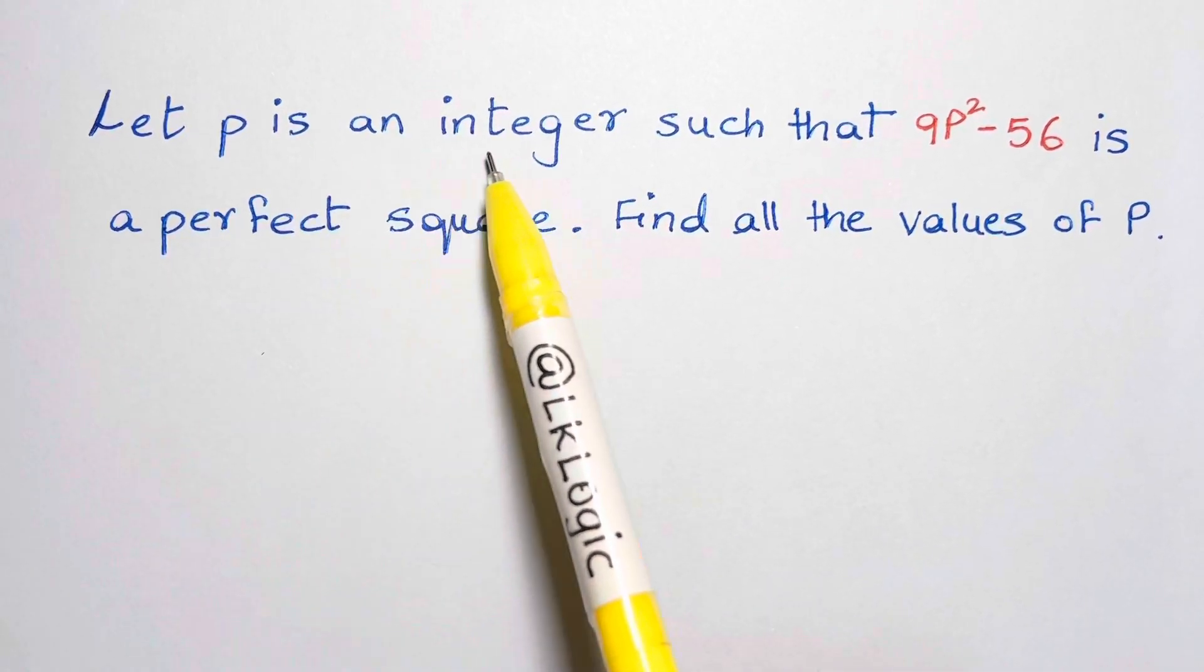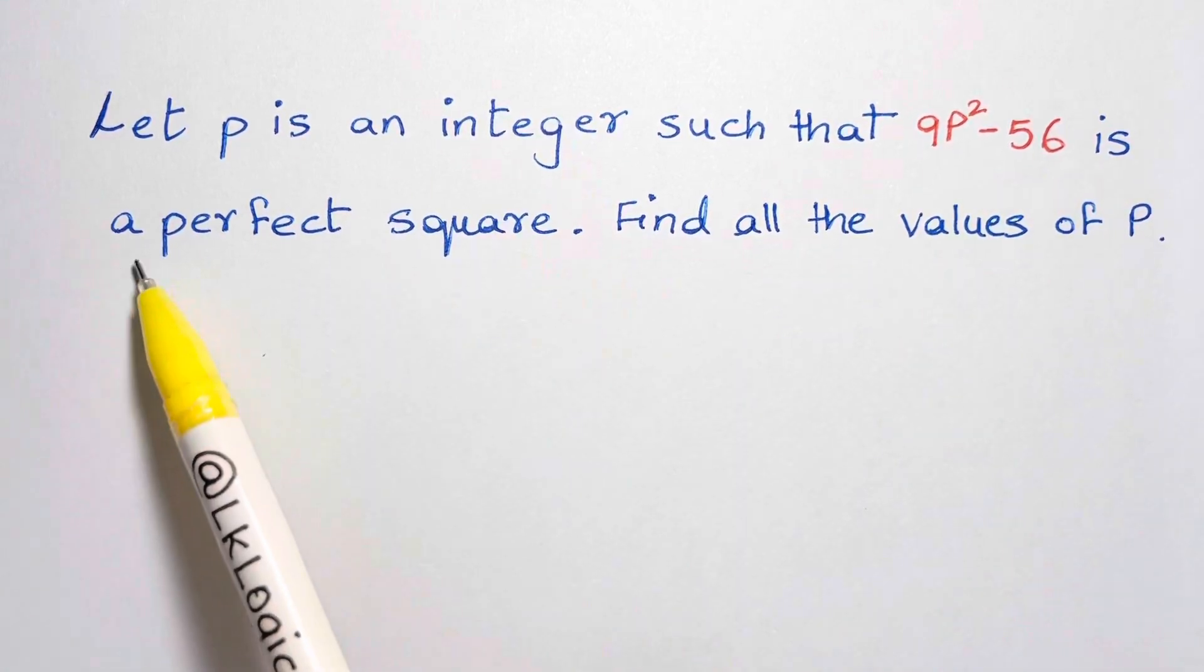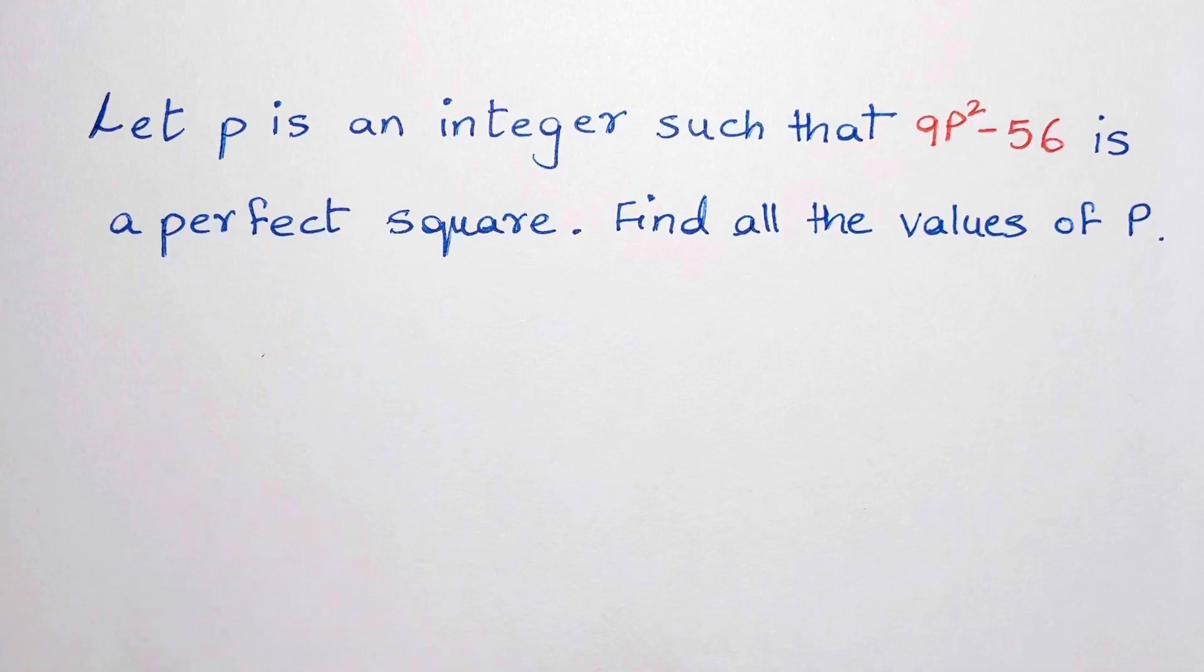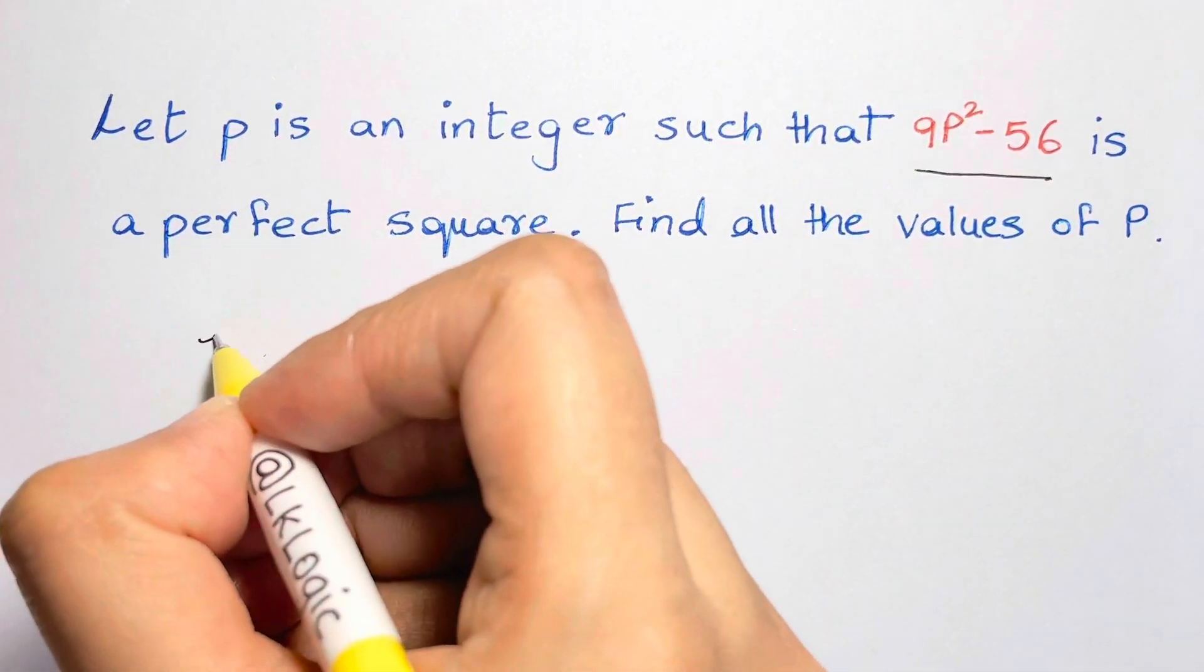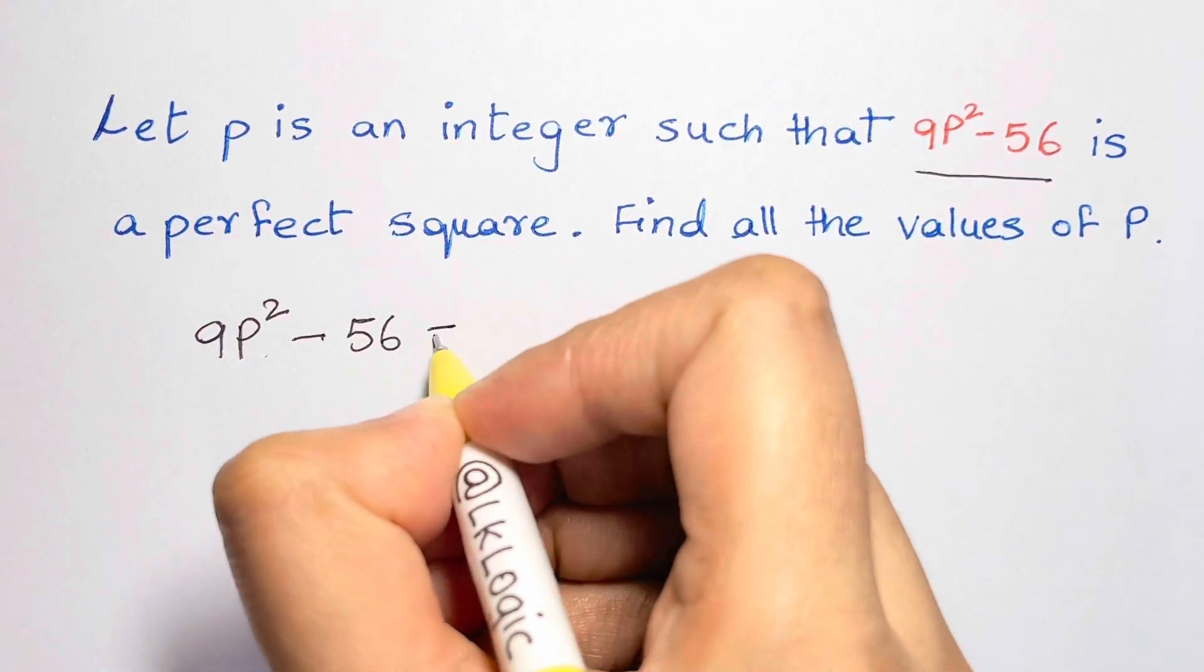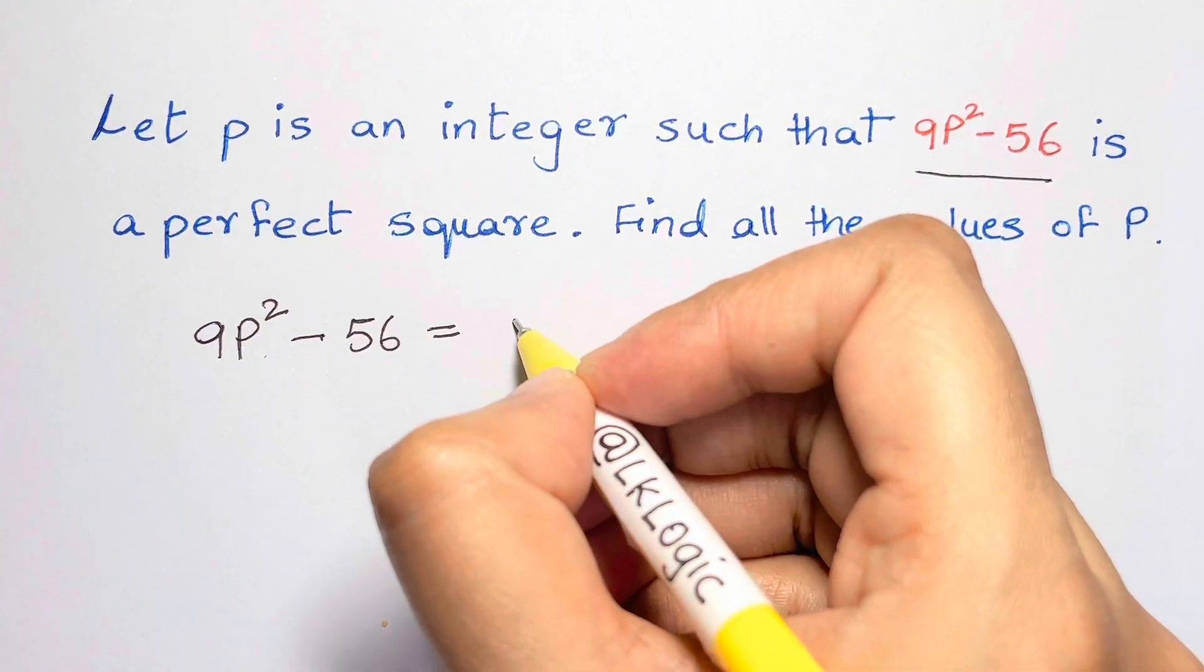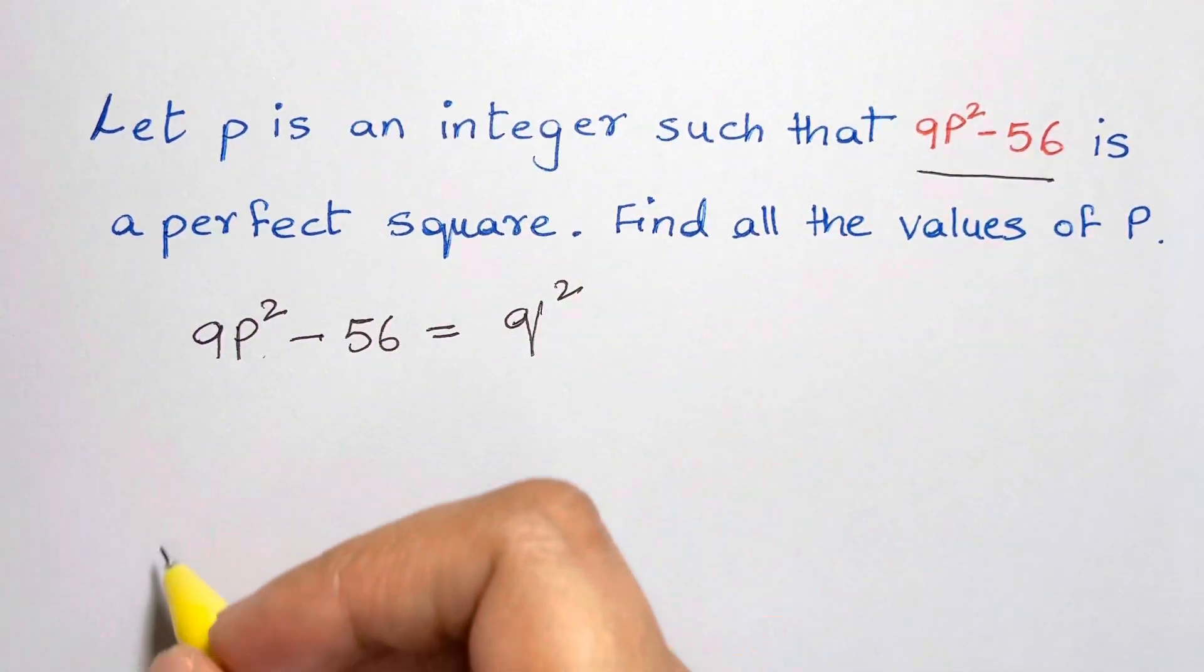Hi guys, let p be an integer such that 9p² - 56 is a perfect square. Find all the values of p. So here let's write down what is given to us: 9p² - 56 is a perfect square. A perfect square can be written as q², where q is an integer.